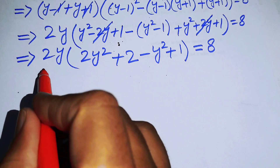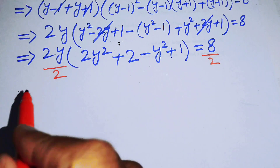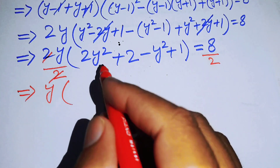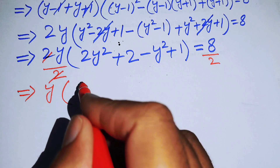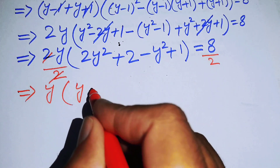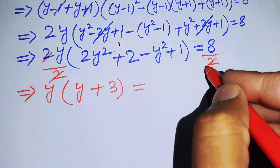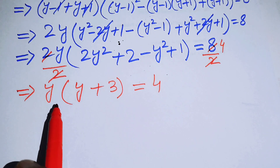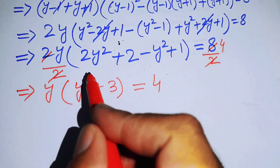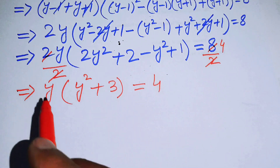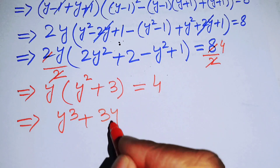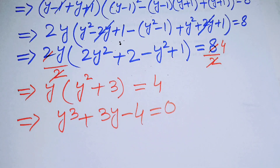Dividing both sides by 2, we get y(y²+3−(y²−1)) = 4. After simplifying, 2y² − y² = y², and we have y(y²+3) = 4. Multiplying through gives y³ + 3y − 4 = 0.